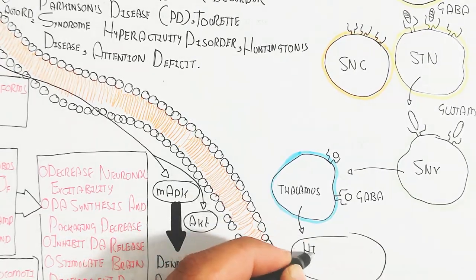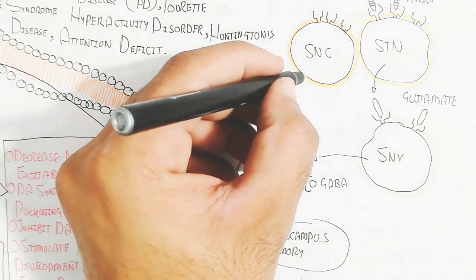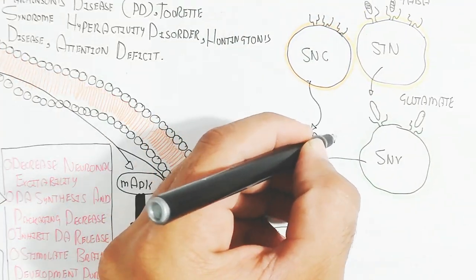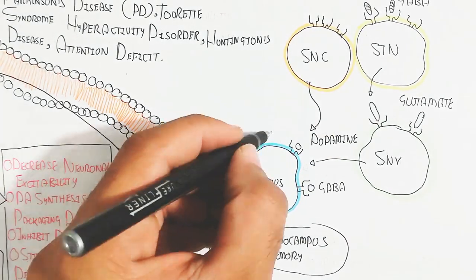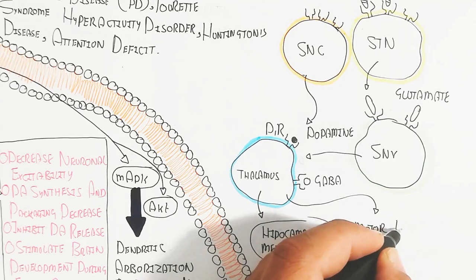If GABA is not produced, the glutamate will trigger the substantia nigra reticulata, which will trigger the thalamus to hippocampus for memory. But this is another pathway.